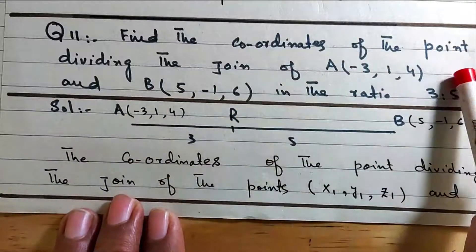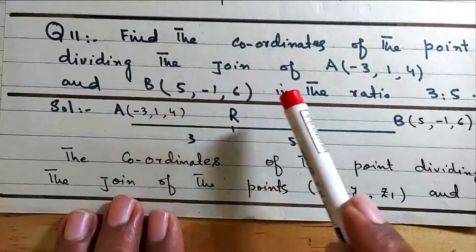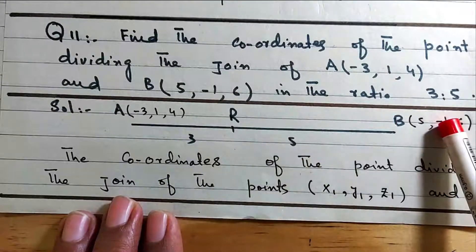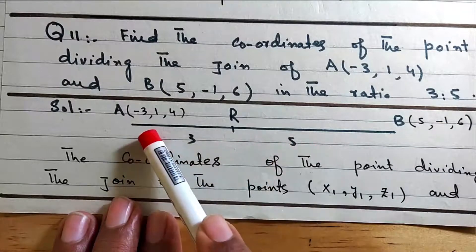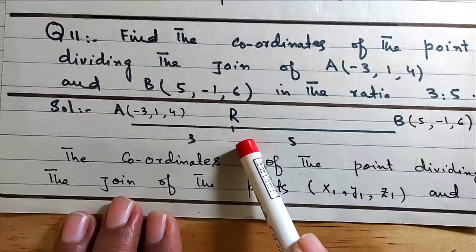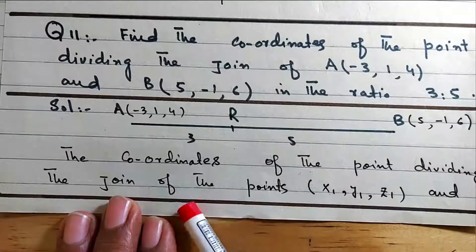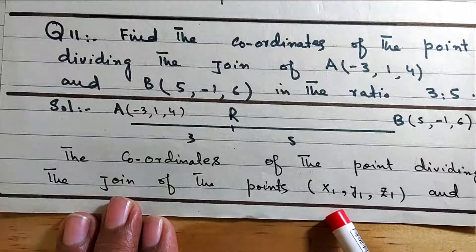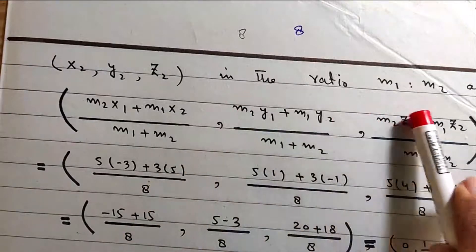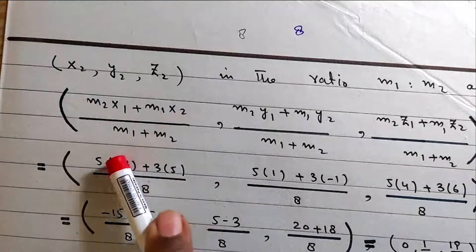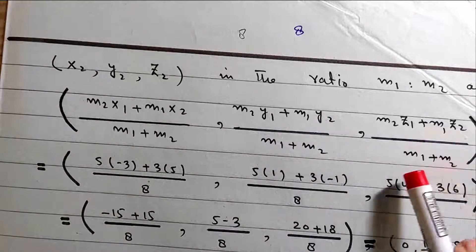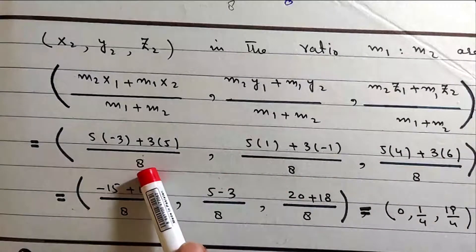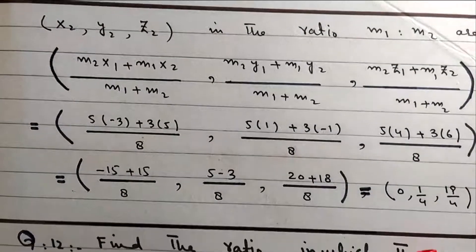The coordinates of the point dividing the join of A and P in the ratio 3:5. The coordinates of the point dividing the join of (x1, y1, z1) and (x2, y2, z2) in the ratio M1:M2 are: M2·x1 plus M1·x2 over M1 plus M2, M2·y1 plus M1·y2 over M1 plus M2, M2·z1 plus M1·z2 over M1 plus M2. Applying this gives 0, 1/4, and 19/14.